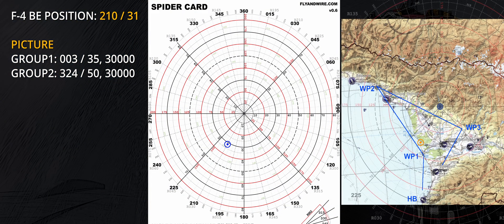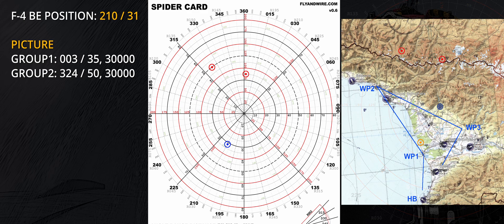All the crew has to do now is plot the positions on the spider card or the map and evaluate the situation. The spider card can be used with other NAVEDs, such as a TACAN station, following a similar modus operandi to facilitate navigation and improve situational awareness.